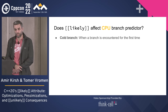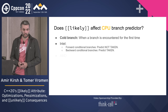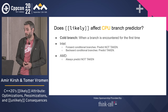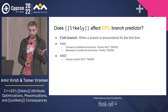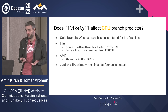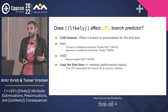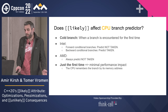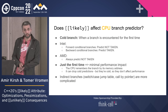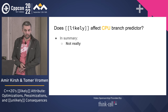For a cold branch seen for the first time, Intel and AMD actually have conflicting default prediction rules. But we don't really care much performance-wise since it's just the first time — not the hot path. In summary, we can't really affect the CPU branch predictor with [[likely]] or [[unlikely]] — it's better to let the CPU do its thing, since it kind of knows better than us based on actual execution history.